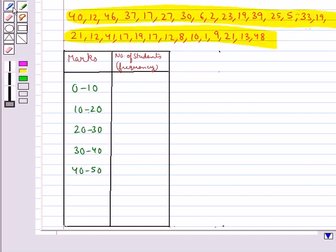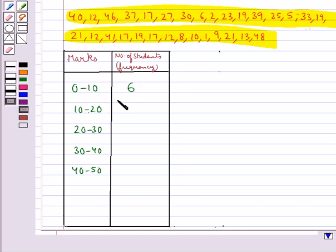From this data, we observe that the number of students who obtain marks from 0 to 10 is 6, from 10 to 20 is 11, from 20 to 30 is 5, from 30 to 40 is 4, and from 40 to 50 is 4.